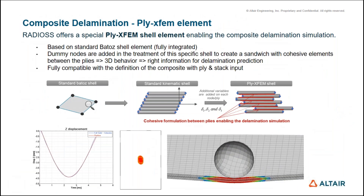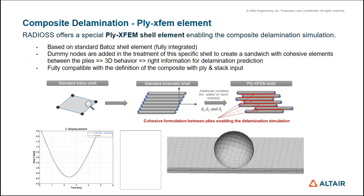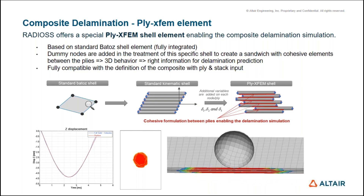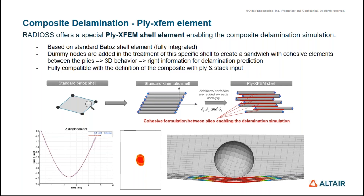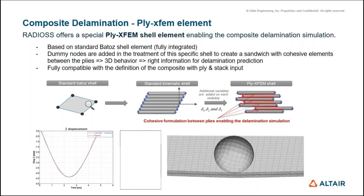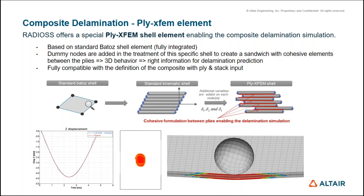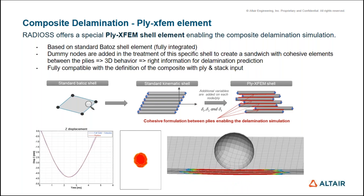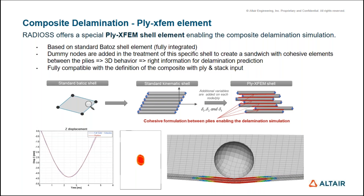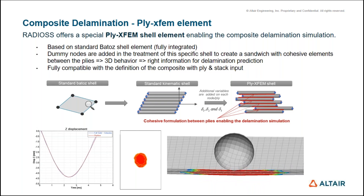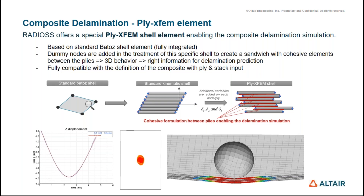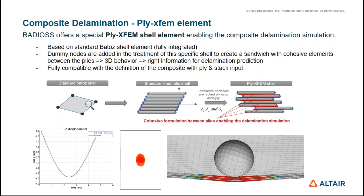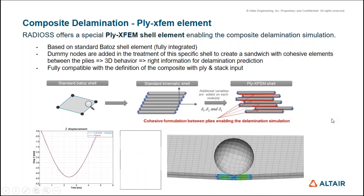For composite delamination, you can use the XFEM method — Extended Finite Element Method — in Radioss. You model your plies in HyperMesh using the BATOZ formulation (a fully integrated element), consider cohesive elements for modeling ply bonding, and check ply delamination using this extended finite element method. These are the advanced algorithms available in Radioss.